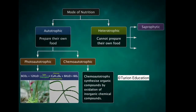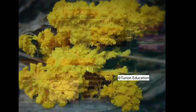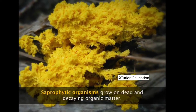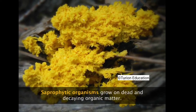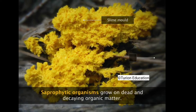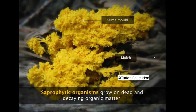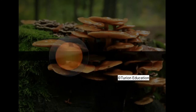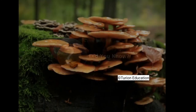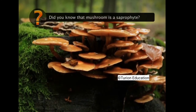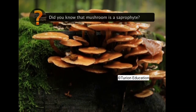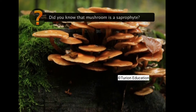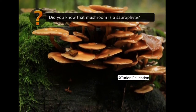Heterotrophic organisms can be saprophytic, parasitic, and holozoic. Saprophytes are organisms that feed on dead and decaying matter — for example, slime mold growing on bark mulch. Mushrooms are also saprophytes; they possess enzymes that decompose lignin in wood and thus derive the nutrition needed for survival.